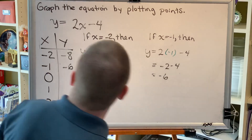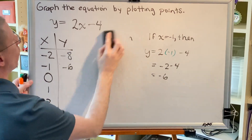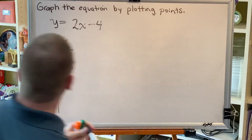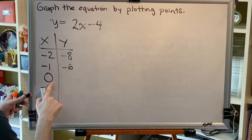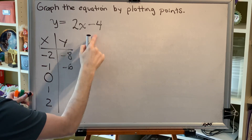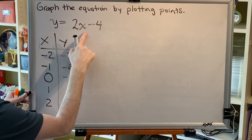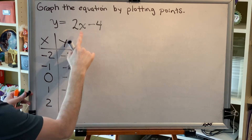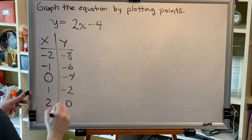Just as before, we're now going to do a lot less algebra and more work in our heads. Multiply first, then subtract. When we plug in 0: 2 times 0 is 0, minus 4 is negative 4. When we plug in 1: 2 times 1 is 2, minus 4 is negative 2. When we plug in 2: 2 times 2 is 4, minus 4 is 0.